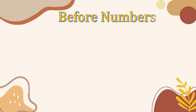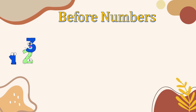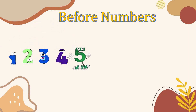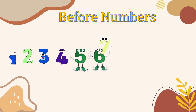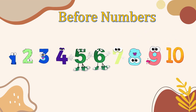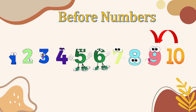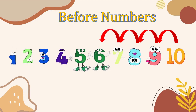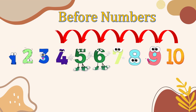Let's start with before numbers first. We will write down the counting from 1 to 10: 1, 2, 3, 4, 5, 6, 7, 8, 9, 10. Before 10 is 9 — we are moving towards left or backwards. Before 8 is 7, before 6 is 5, before 4 is 3.